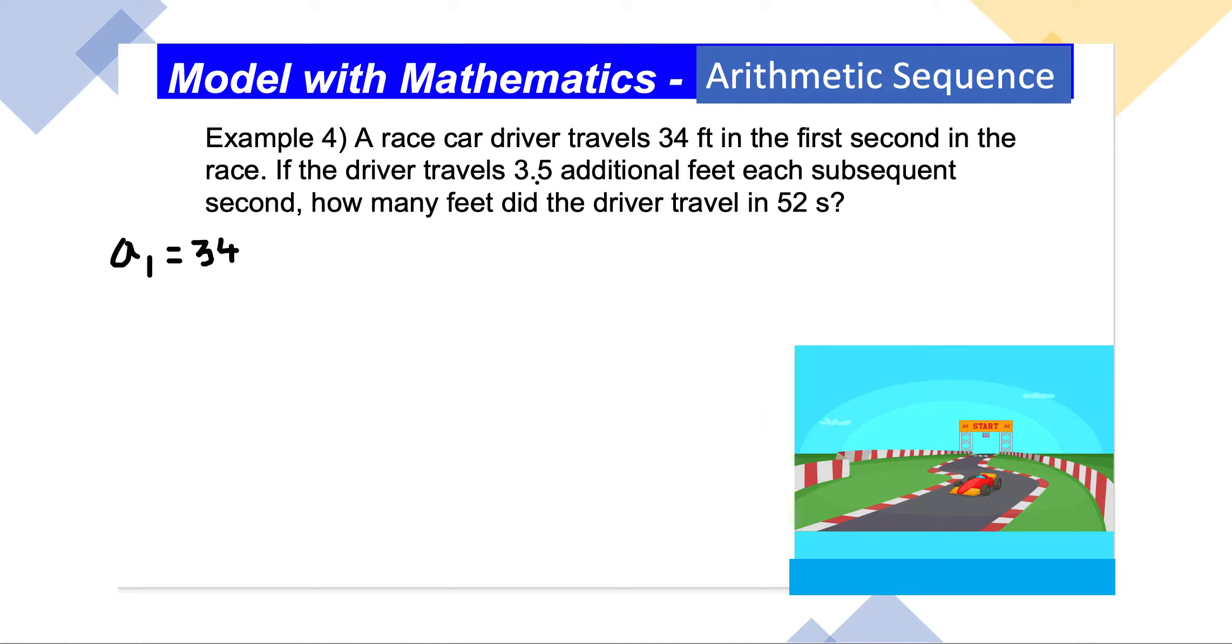The common distance is the same for all the subsequent seconds. So we know d, the common distance, is equal to 3.5 feet. Let me write here d = 3.5.